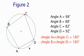Every time you have a cyclic quadrilateral, the opposite angles are supplementary. They add up to 180.